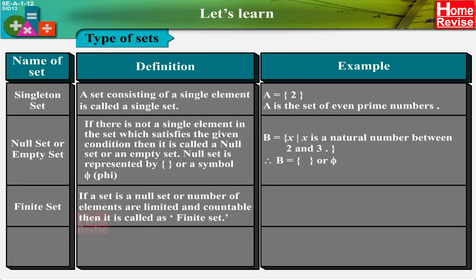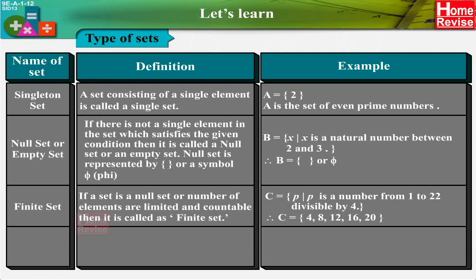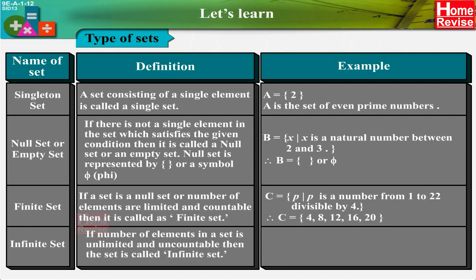Finite set: If a set is a null set or the number of elements is limited and countable, it is called a finite set. Example: C = {p : p is a number from 1 to 22 divisible by 4} = {4, 8, 12, 16, 20}. Infinite set: If the number of elements in a set is unlimited and uncountable, the set is called an infinite set. Example: N = {1, 2, 3, ...} up to infinity.